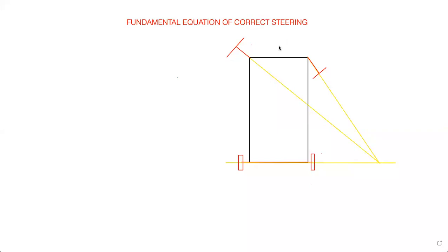Good morning students. We are going to learn about the fundamental equation of correct steering. The need for this equation is that if you do not follow correct steering, you may face problems like the vehicle skidding. For example, if you want to make a right turn, the vehicle has to turn about some center of rotation, but instead it is going to skid.